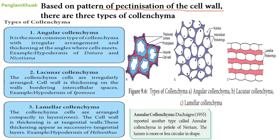Based on the pattern of pectin deposition (pectinization) of the cell wall, there are three main types of colenchyma. Number one is angular colenchyma — the most common type, with irregular arrangement and thickening at the angles where cells meet. This type is found in the hypodermis of Datura and Nicotiana.